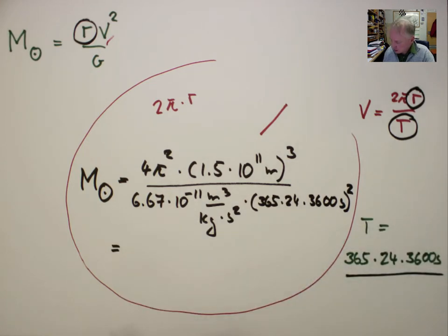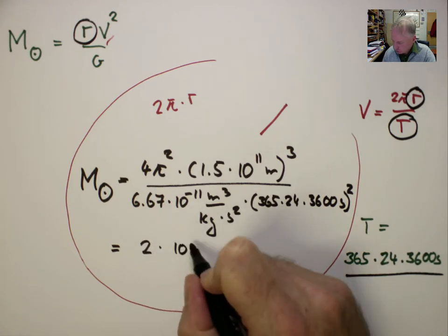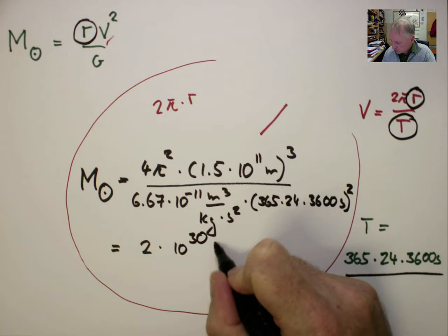And we can type this into the calculator and obtain a solar mass of 2 times 10 to the 30 kilograms.